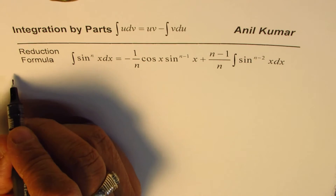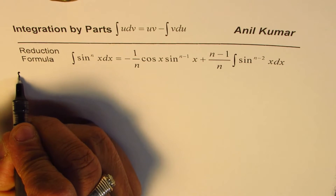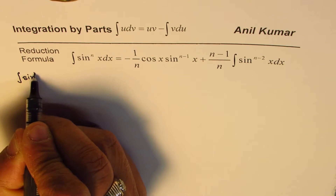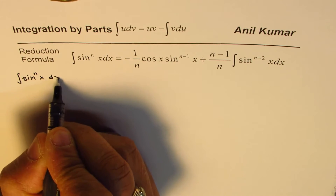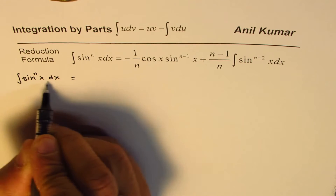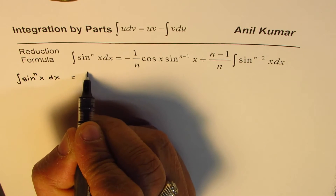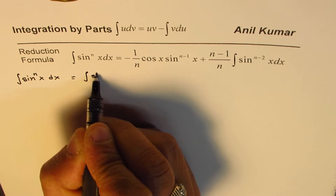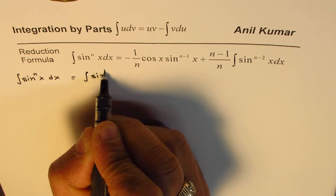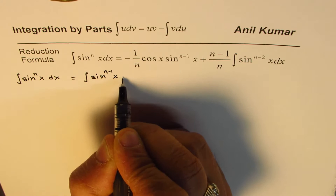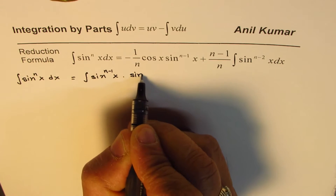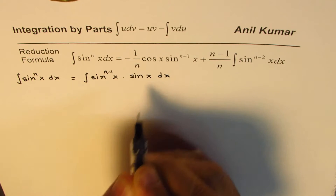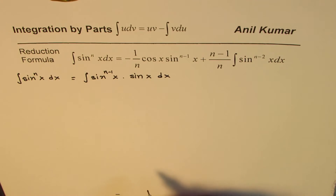Now let us prove this formula. We are working with the integral of sine to the power of n of x dx. We want to write this as a product of two functions, so we can write it as a product of sine to the power of n minus 1 of x and sine x dx. So as you can see, we have a product of two functions here.